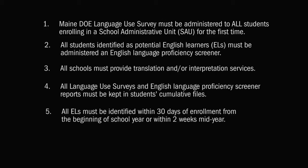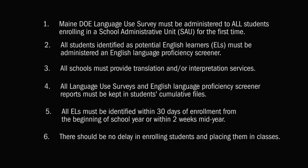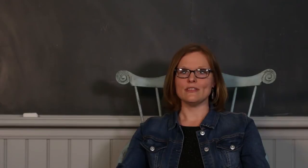All English learners must be identified within 30 days of enrollment from the beginning of the school year or within two weeks mid-year. There should be no delay in enrolling students and placing them in classes. If an enrolling student has already been identified as an English Learner by another Maine SAU, an English Language Proficiency screening assessment is not needed. The student's English Learner status can be confirmed in the state student data system. It's still required that the parent or guardian of any student enrolling in the SAU for the first time complete the Language Use Survey. This is to expedite the identification and placement process, as there can often be a delay in receiving a student's cumulative file from his or her previous district.